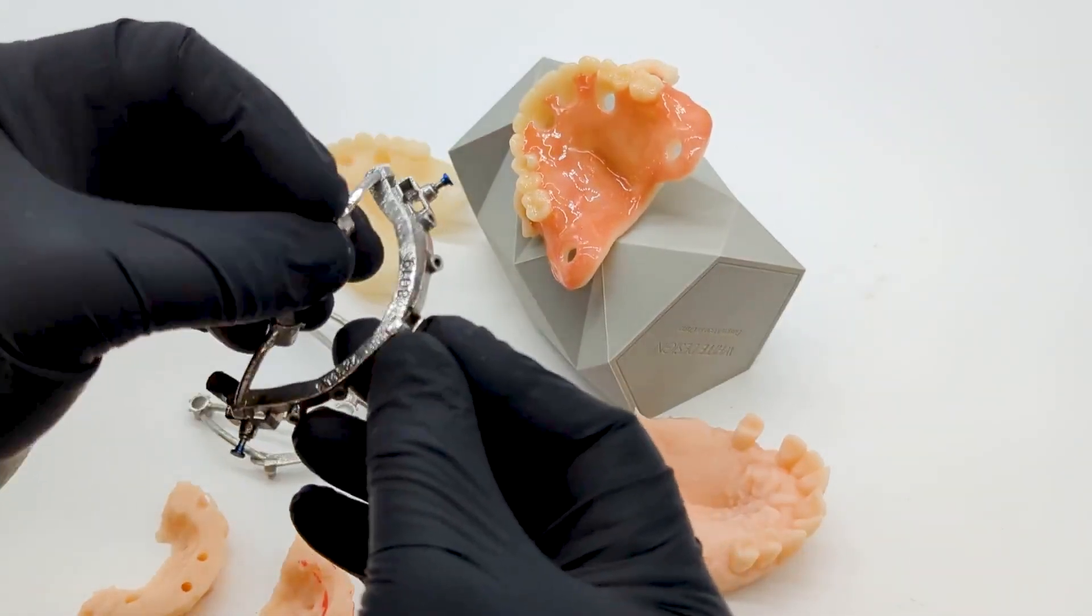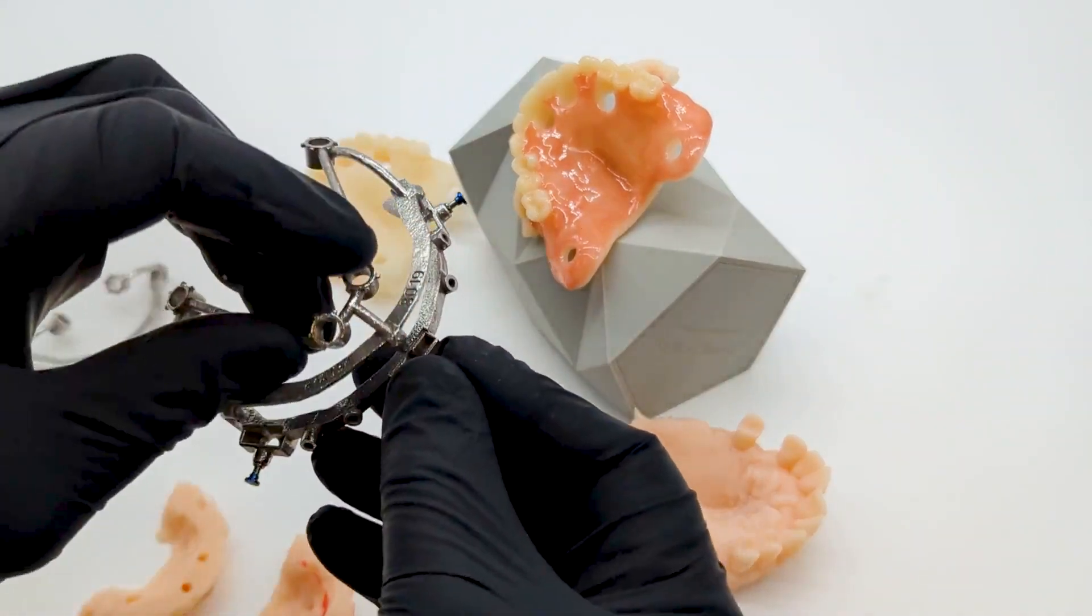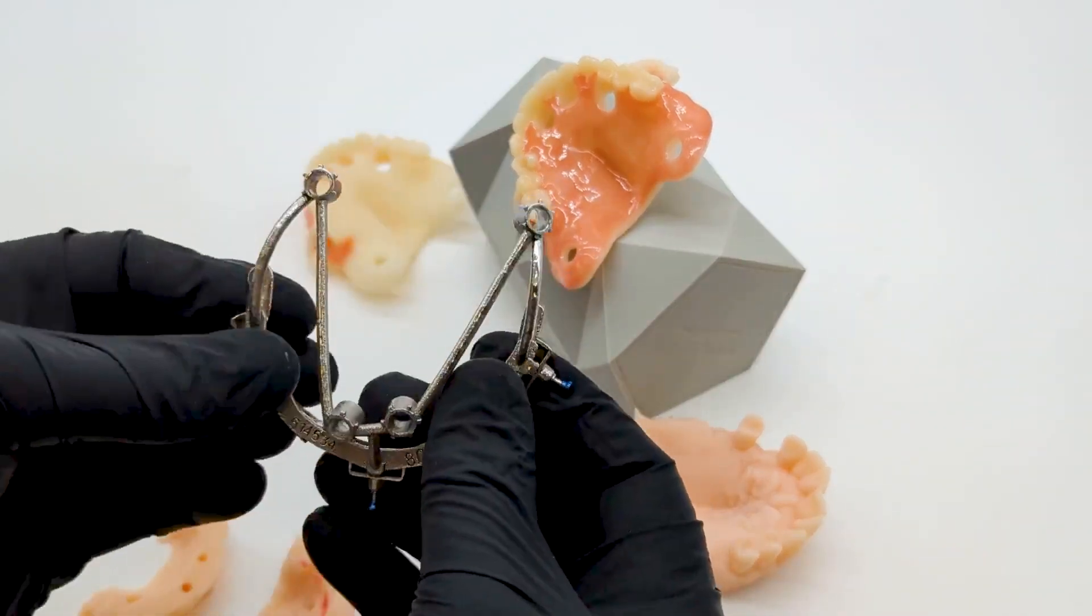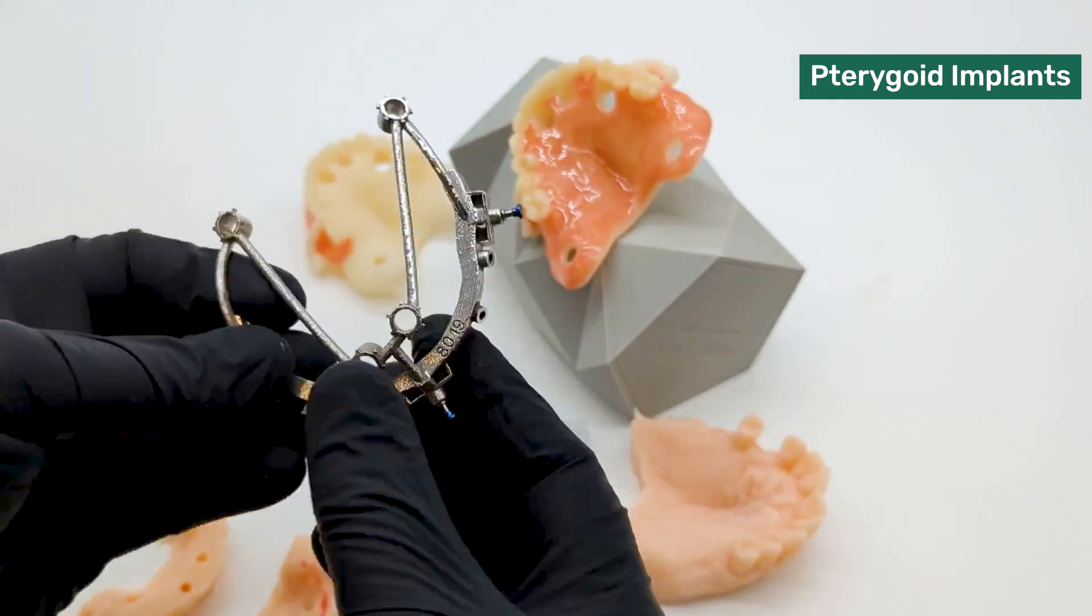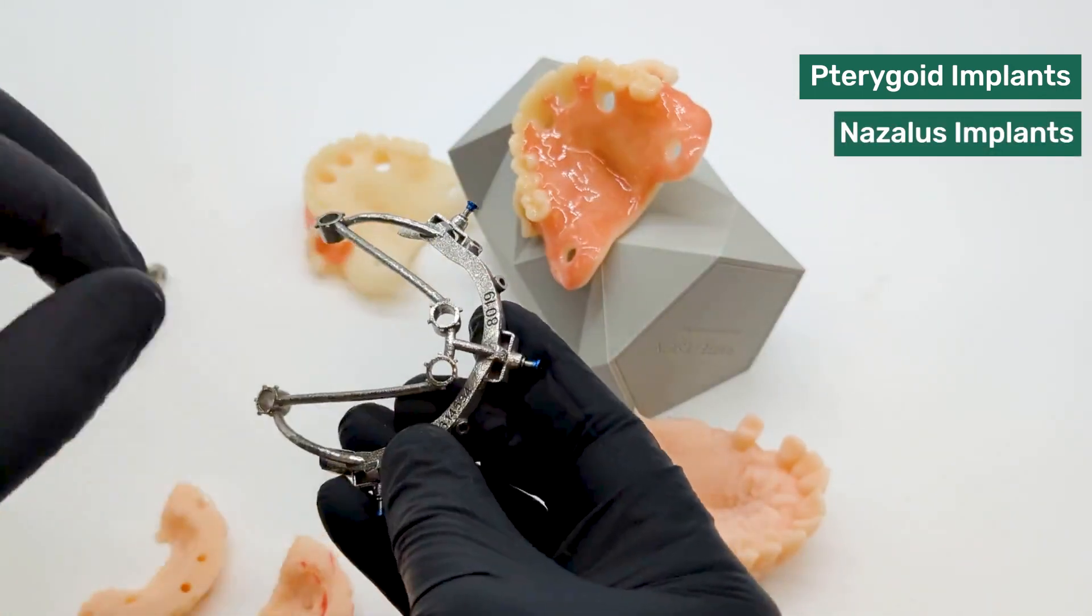Once those implants are in, then we're going to guide a couple of pterygoids. So those are also angled. You can see the nubs here, and then two implants in the anterior.